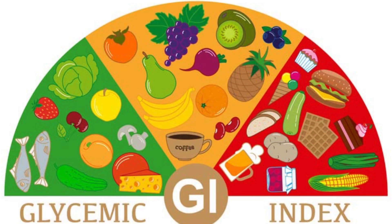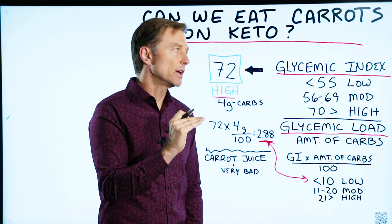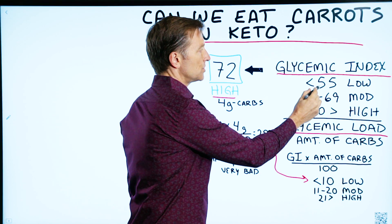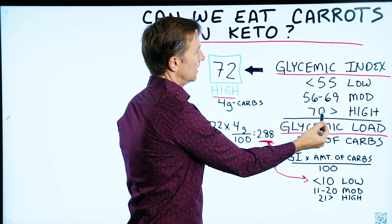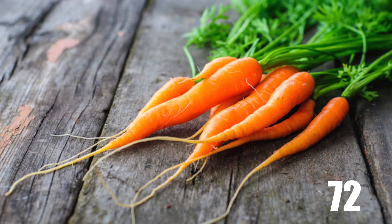What is the glycemic index? It's a scale of carbohydrates and how fast that carbohydrate will raise your blood sugar. Below 55 is low, above 70 is high. Carrots at 72 is pretty high.